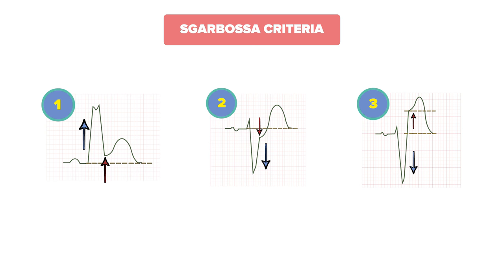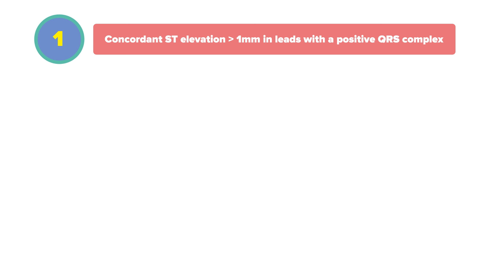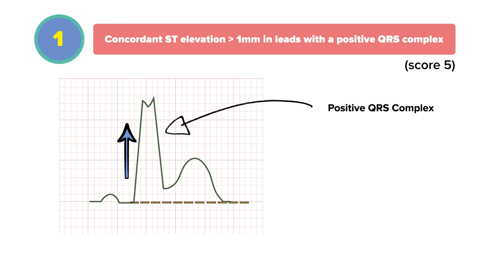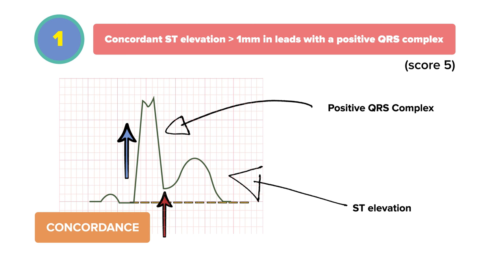The first criteria is concordant ST elevation greater than one millimeter in leads with a positive QRS complex. If you see this on an EKG, you assign a score of five. Here you see an EKG lead with a positive QRS complex, and in this case the ST segment is going in the same direction — this is what we call concordance, when both the QRS complex and the ST segment elevation are going in the same direction. If there are concordant ST elevations greater than one millimeter, you assign a score of five.